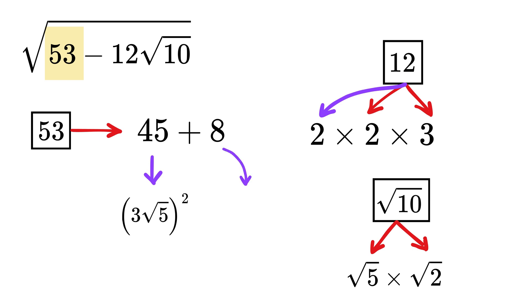Similarly, 8 can be written as the square of 2 times the square root of 2, because squaring 2 times the square root of 2 gives 2 squared, or 4 times 2, which is 8.